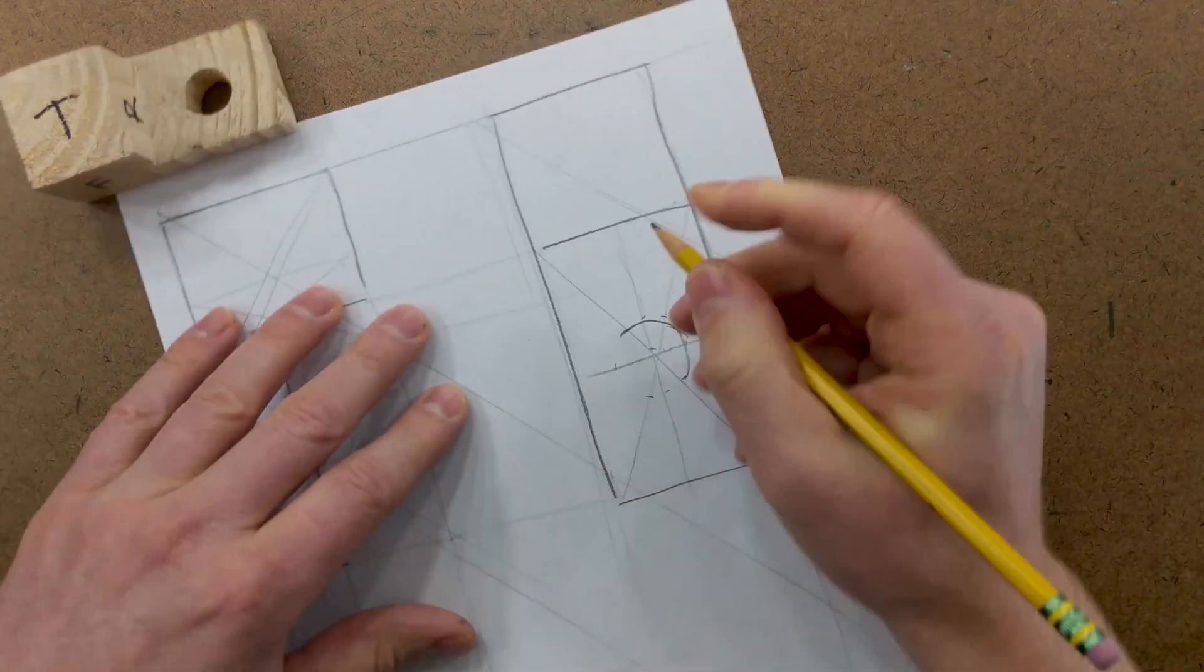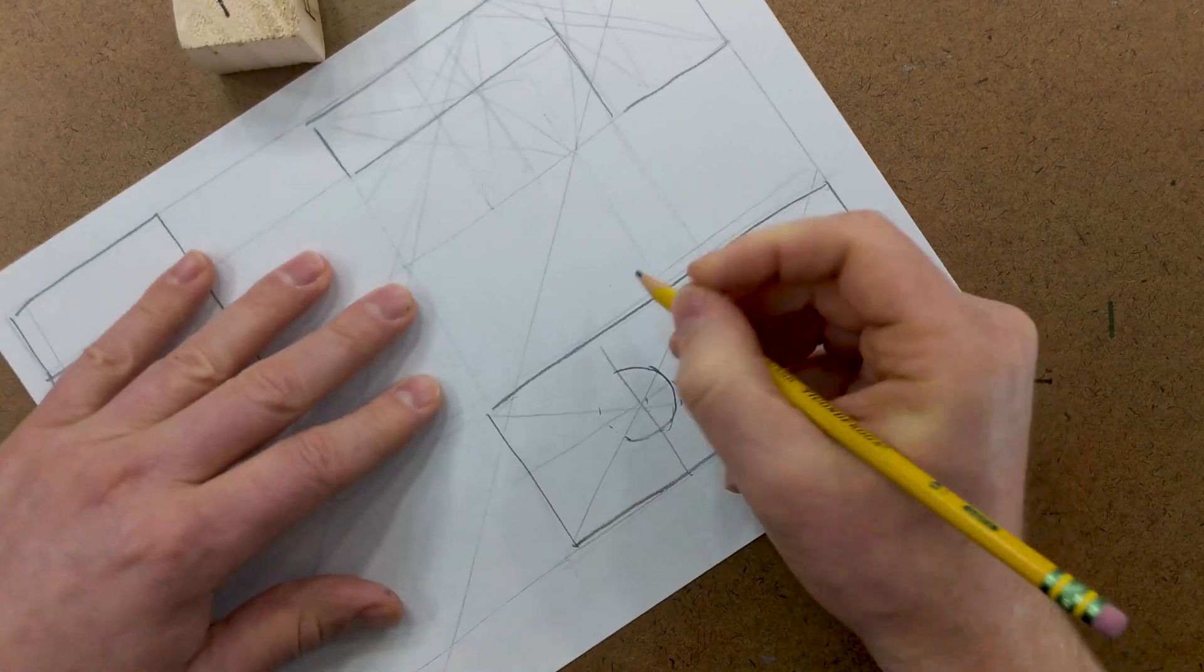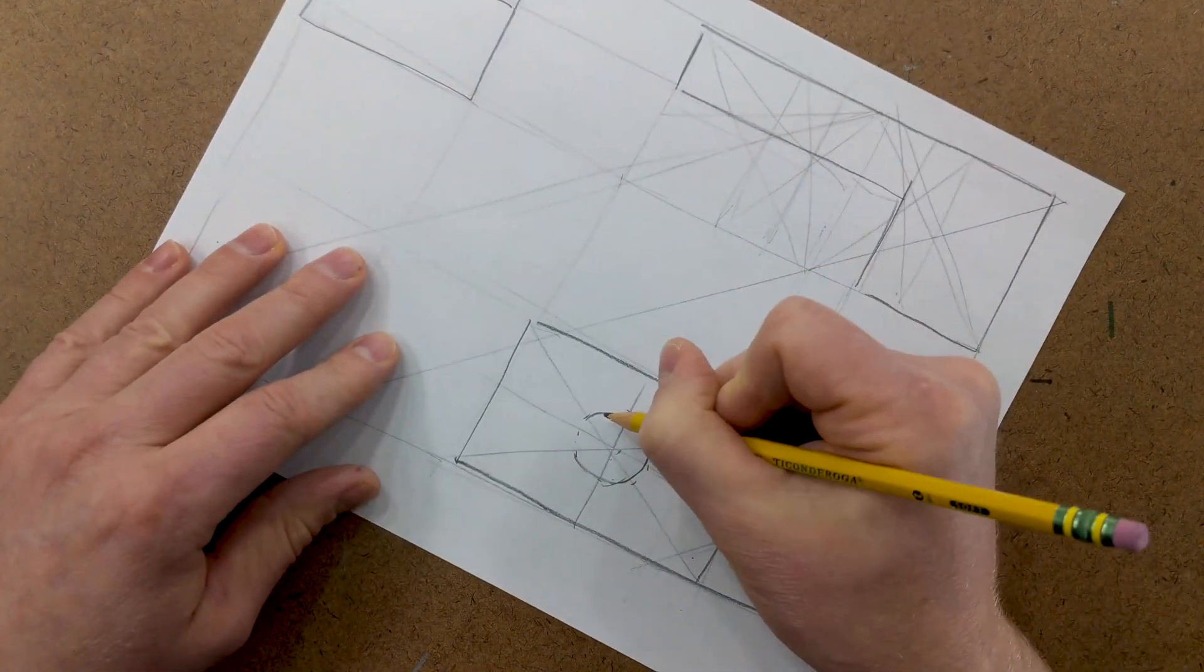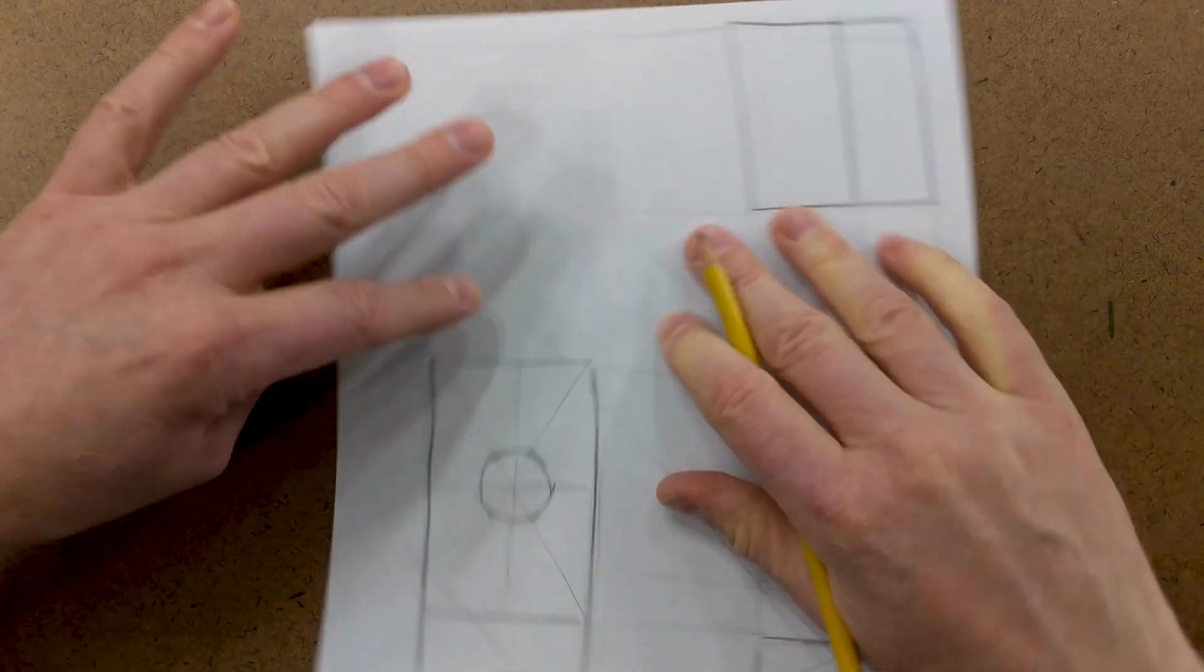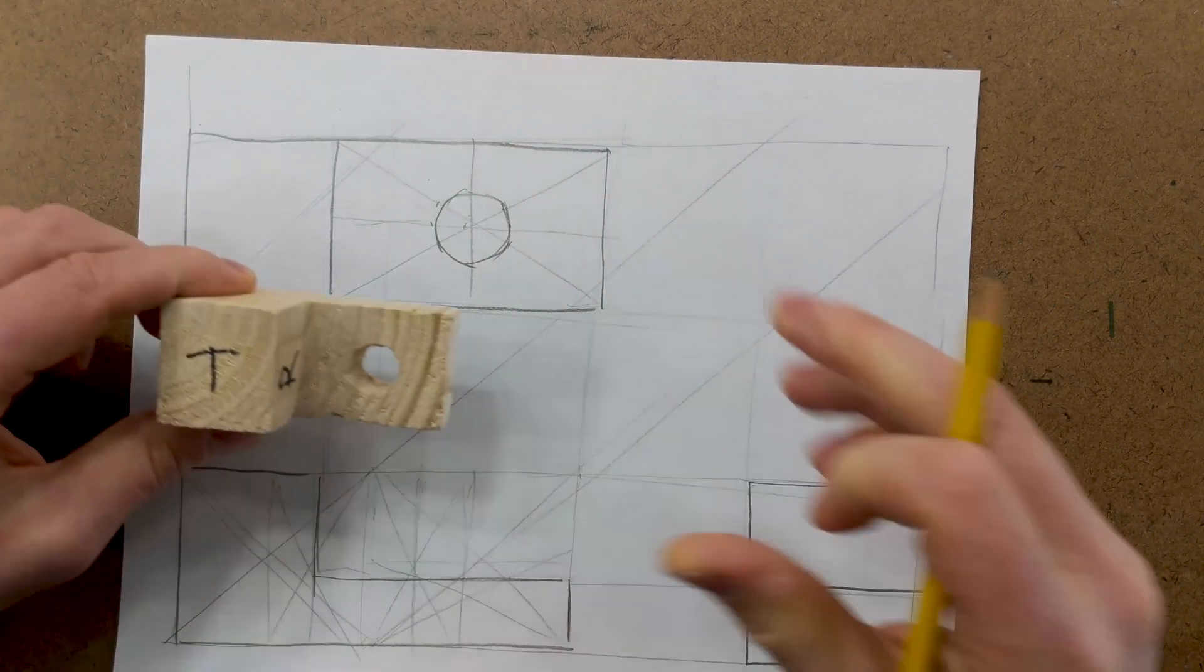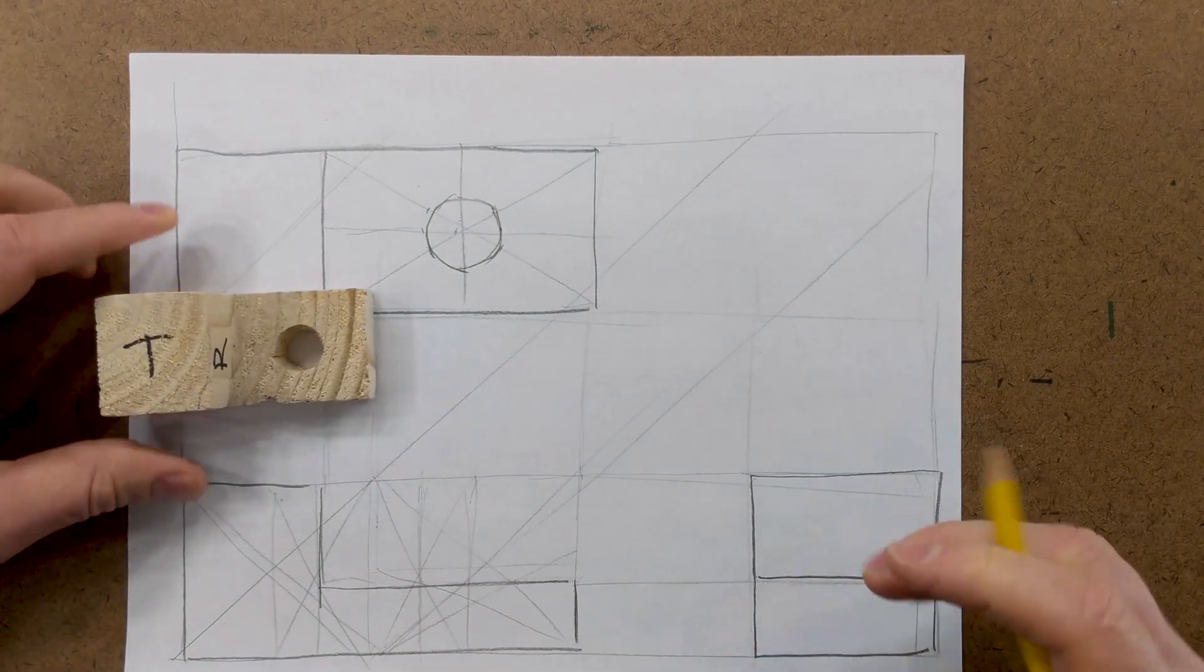Rotate your paper around, and it won't be a perfect circle, but it'll be good enough for communicating your drawing.